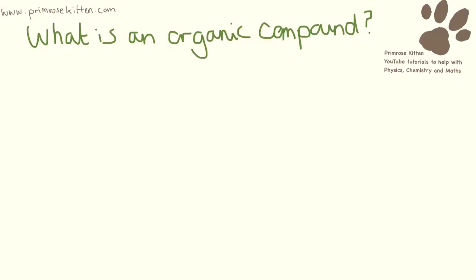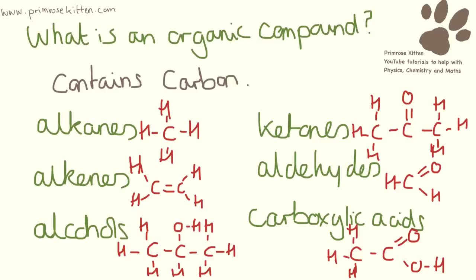Organic compounds come up a lot in chemistry, but what actually are they? At its most simple level, an organic compound is anything that contains carbon. There are lots and lots of different things these can be. This can range from our basic ones over here that are hydrocarbons to really quite complicated carboxylic acids over here that are going to include oxygen and potentially other things as well. So an organic compound is just anything that contains carbon as a compound.